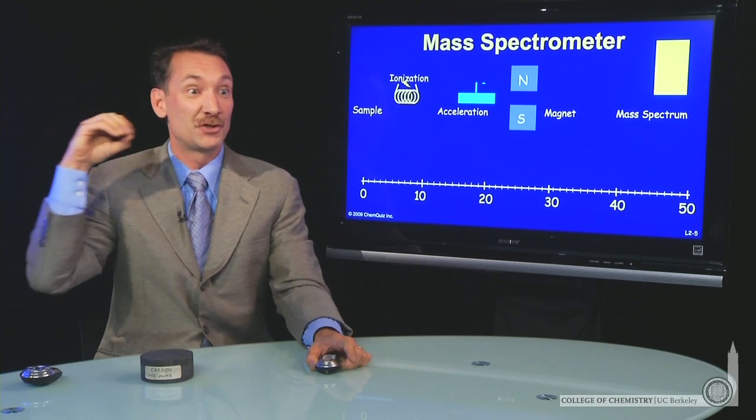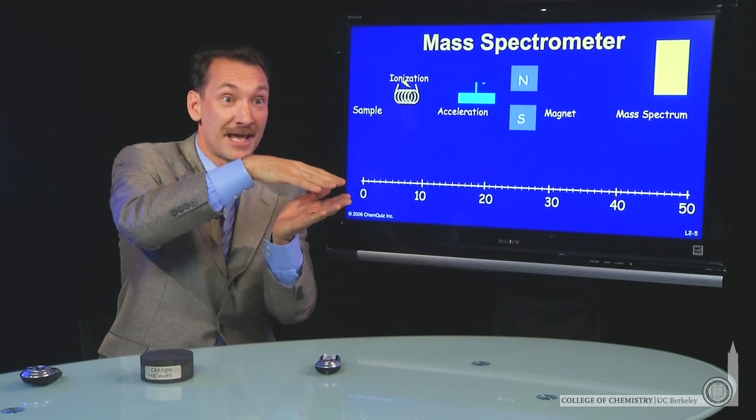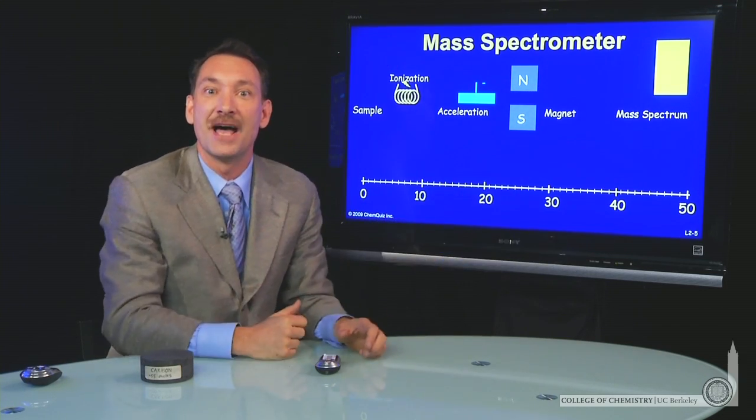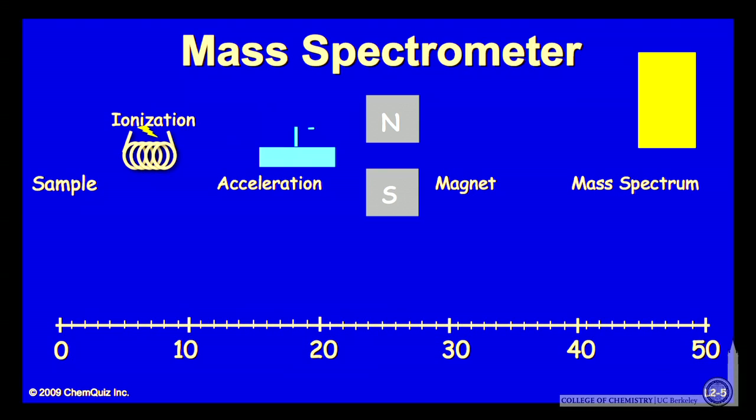So you have this stream of particles and it hits that magnetic field and it's fanned out based on their mass. Here's a little animation that shows that happening. You take a sample and you allow it to be ionized and accelerate it. It goes through the magnetic field and it's deflected.